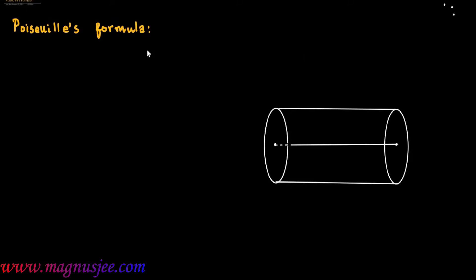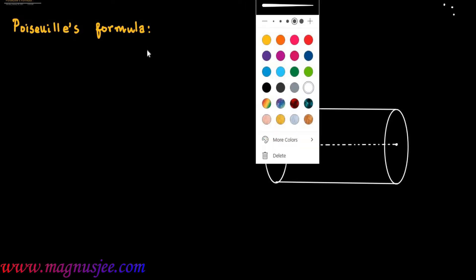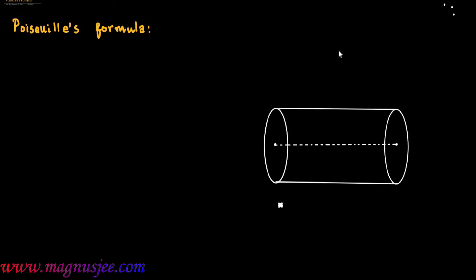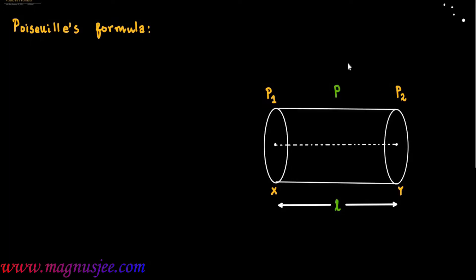In the diagram we have a narrow horizontal tube. This is the axis of the tube. We can denote the length of the tube as L. The tube has two ends x and y. P1 and P2 are the pressures of liquid at ends x and y respectively. P is the pressure difference which acts from end x to y towards the right, where P equals P1 minus P2.